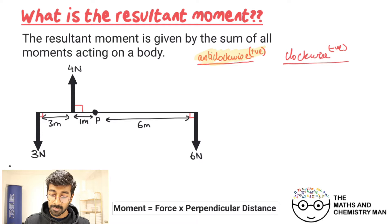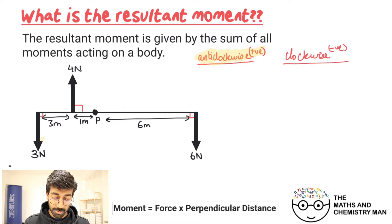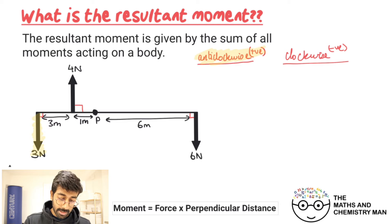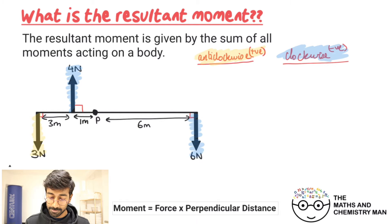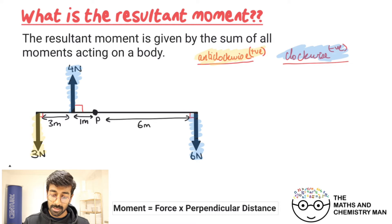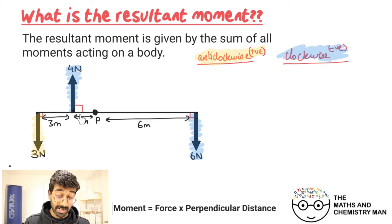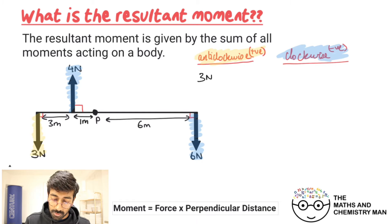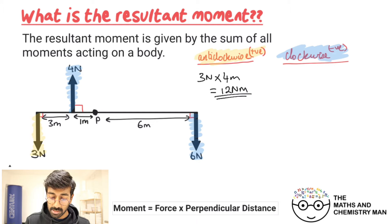We'll start by writing out anti-clockwise — remember, anti-clockwise we give a positive sign, and clockwise we give a negative sign. Now, let's identify which forces are going anti-clockwise and which are going clockwise. Using a yellow highlighter, the three Newton force is creating an anti-clockwise moment. Starting with the anti-clockwise moment, be careful: the pivot point is here and the perpendicular distance is four meters to that force, not three meters.